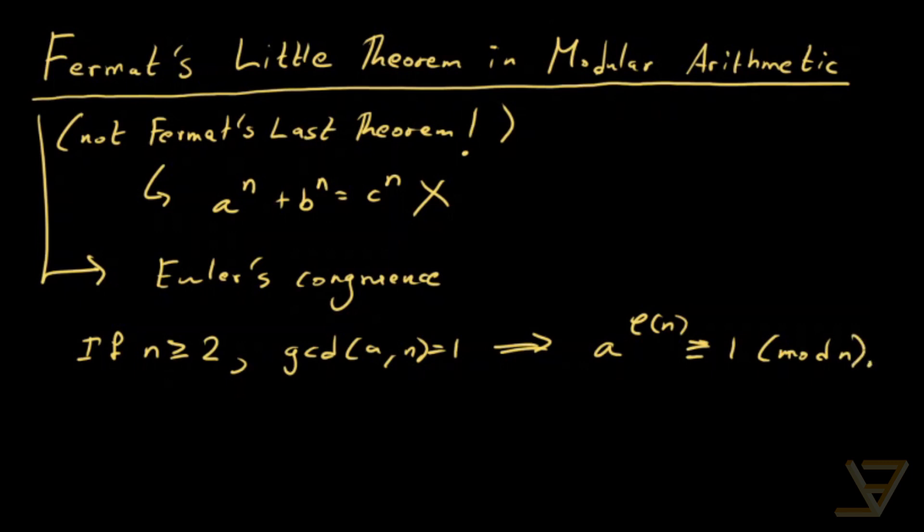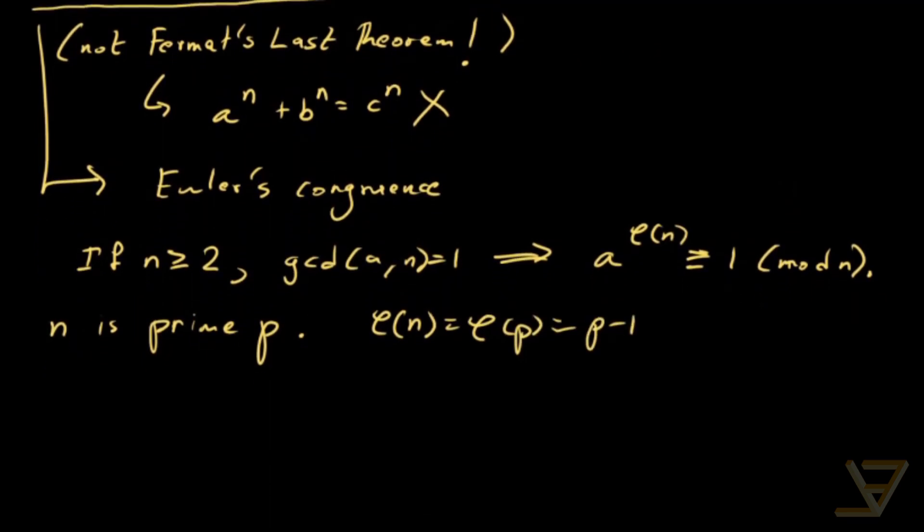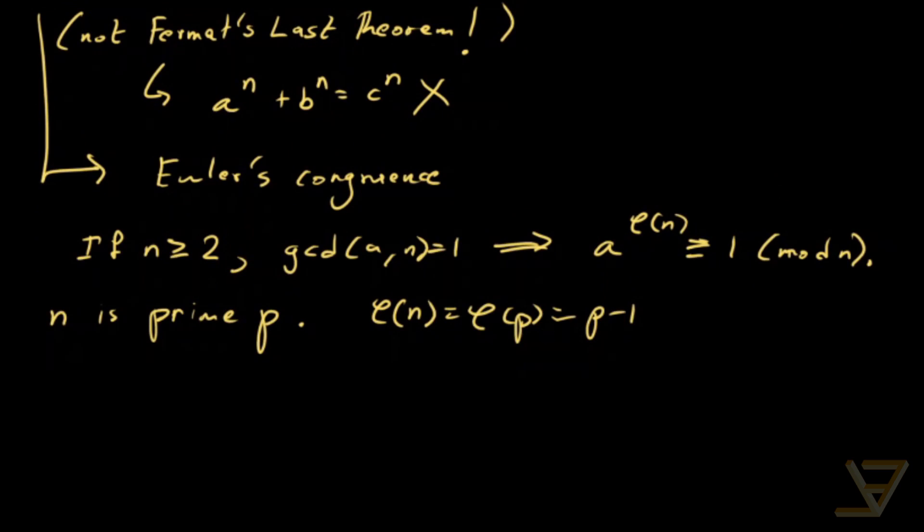Now, what is the special case of this when n is prime? Let's say it's a prime p. In that case, phi of n is phi of p, which is p minus 1 by a standard computation, because in essence, nothing between 1 and p is divisible by p except for p. So what we get then is that a to the power of p minus 1 is congruent to 1 mod p.